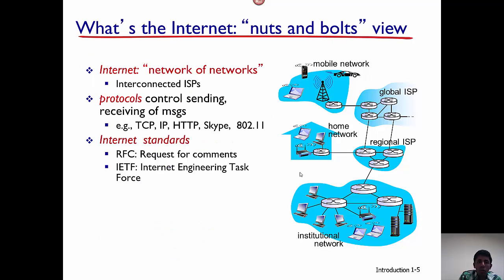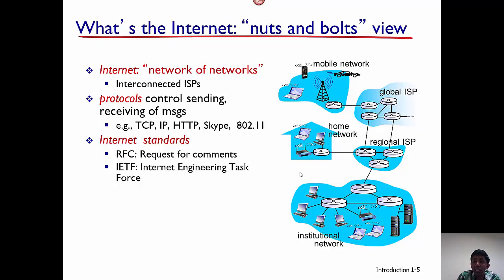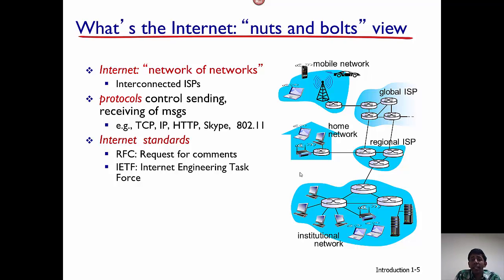What you can see from this figure is that the internet is a network of networks. There are multiple networks here — actually there are five networks as you can see in this figure: the mobile network, the home network, the institution network, and the two ISPs. So all these networks together form the internet.